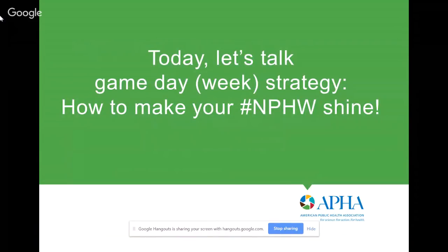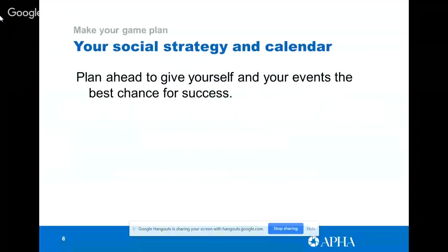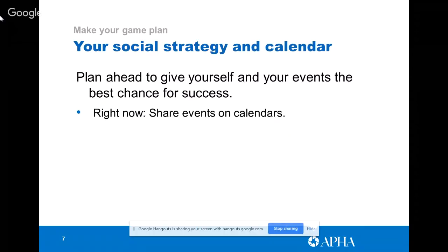Strategy: how we are going to make National Public Health Week shine in our communities. Step one is having a strategy and a calendar. We are on March 13th, so we're thinking in advance for an event happening April 1st through 7th — that's great. Right now we should be sharing our events on calendars. Go to nphw.org, click on events, and you will see that you can share your event on the National Public Health Week calendar and see all other events happening across the country.